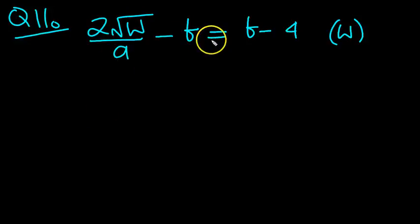2 root w over a minus b equals b minus 4. We want to solve this for w. So the first thing to do is move this minus b over to b here.